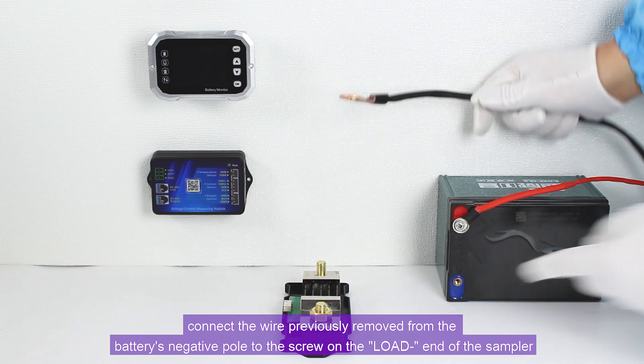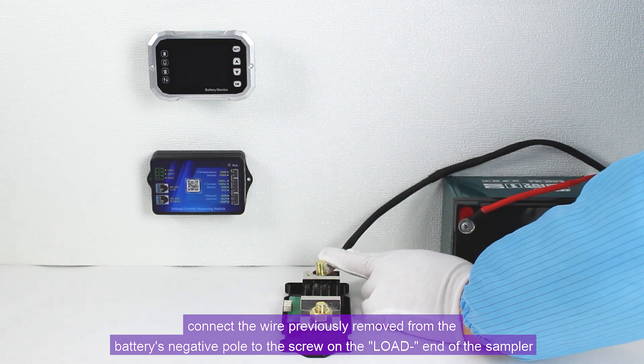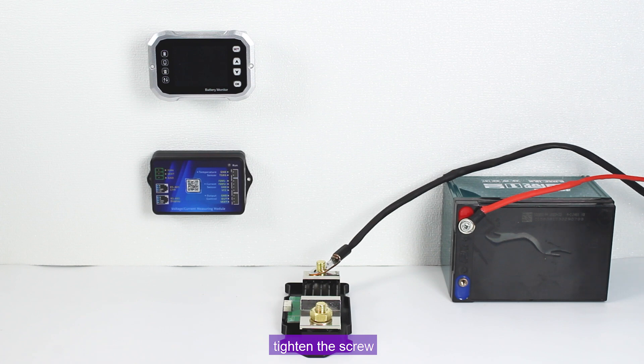Connect the wire previously removed from the battery's negative pole to the screw on the load end of the sampler. Tighten the screw.